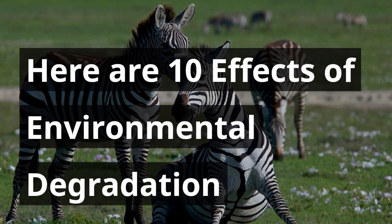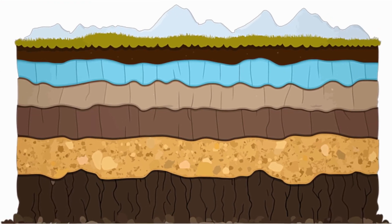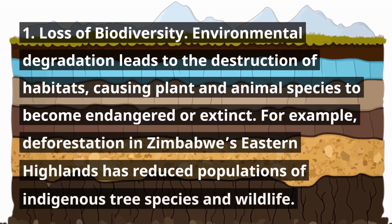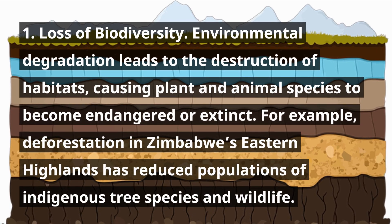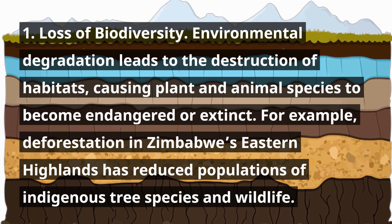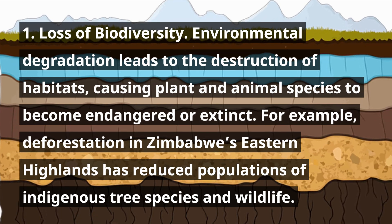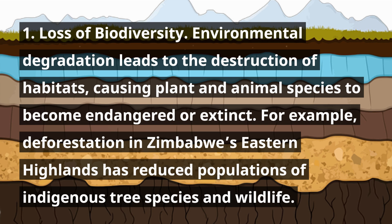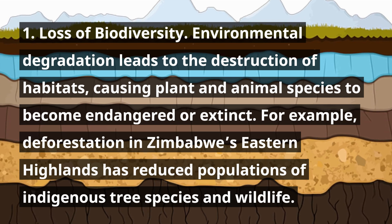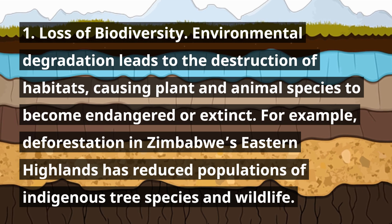Here are 10 effects of environmental degradation. 1. Loss of biodiversity. Environmental degradation leads to the destruction of habitats, causing plant and animal species to become endangered or extinct. For example, deforestation in Zimbabwe's eastern highlands has reduced populations of indigenous tree species and wildlife.